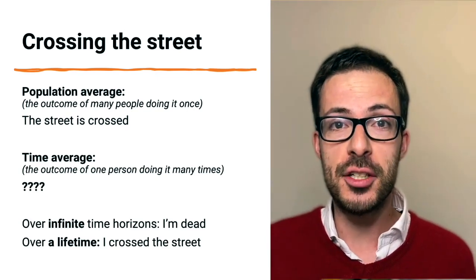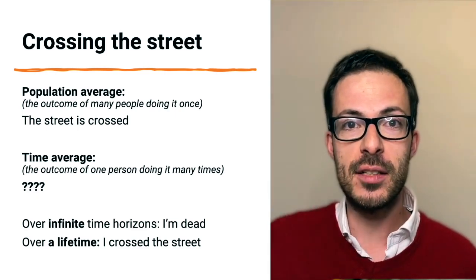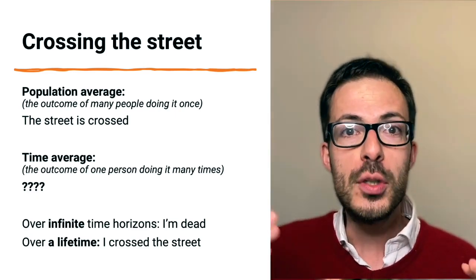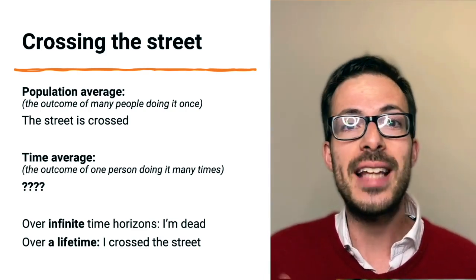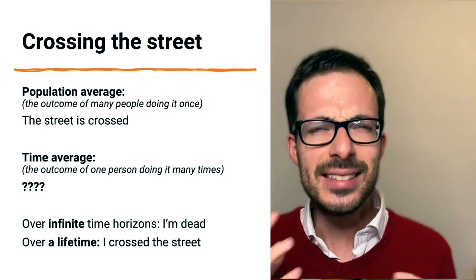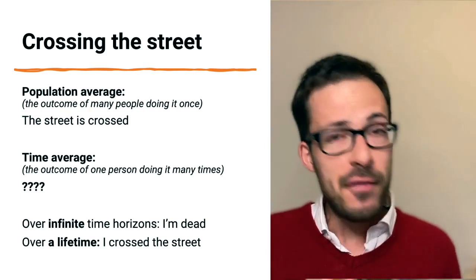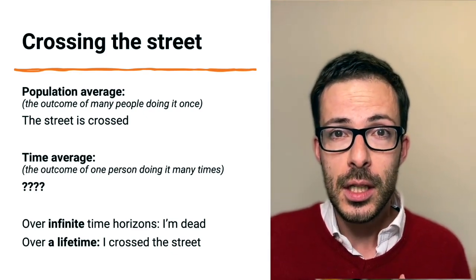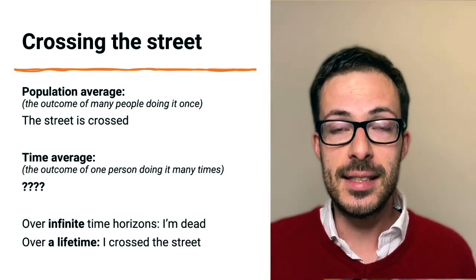Conversely, what's the time average? Well, it depends by what we mean with many when we say that it's a single person performing the activity many times. If we use the traditional idea of using an infinite time frame, we discover that the person crossing the street infinite times will end up dead. Earlier or later, they will be hit by a car. But this doesn't really make sense for most people. For most people, the time frame of relevance is a lifetime. And for most people, if they cross the street over their lifetime, they don't die. So for them, the time average is still that the street has been crossed.